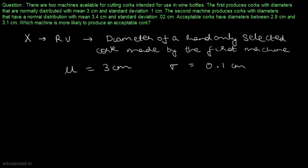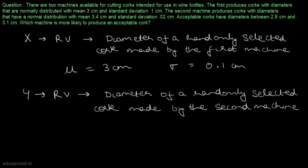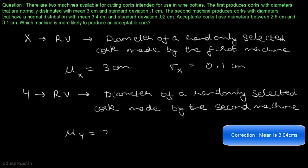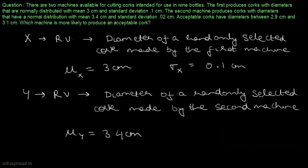Similarly, let's define one more random variable for the second machine. Let y be a random variable that denotes the diameter of a randomly selected cog made by the second machine. We are given that y is normally distributed with mean mu y equal to 3.4 cm and standard deviation sigma y equal to 0.02 cm.